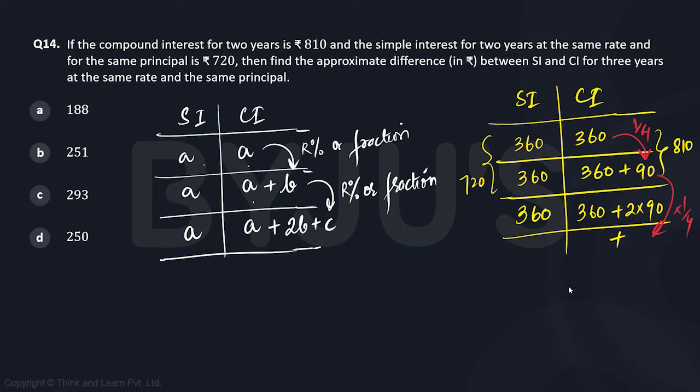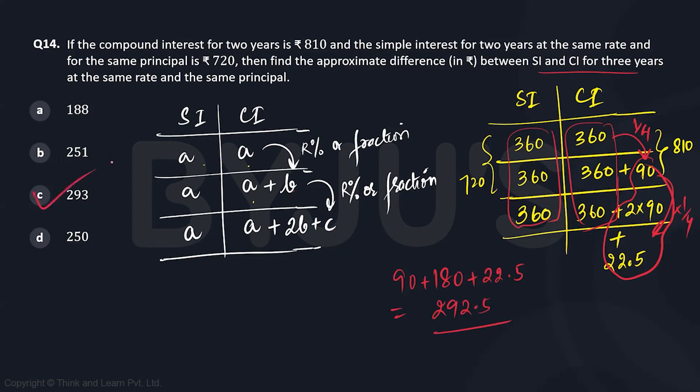So now the question is what is the difference between CI and SI for three years? If you compare 360, 360, 360 under SI versus 360, 360, 360 under CI, can we say the extra component is over here which is 90 plus 2 into 90 plus 22.5. So this is 270 plus 22.5 which is 292.5. The closest option is C option.